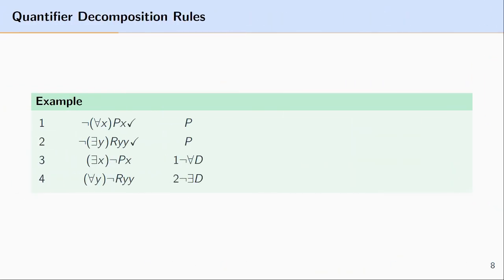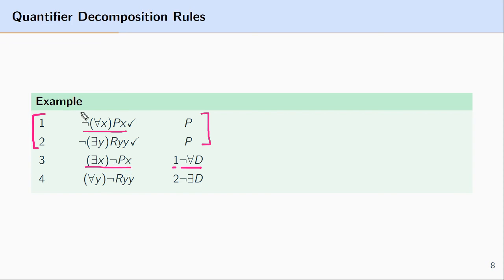Let's look at an example where both negated universal decomposition and negated existential decomposition are applied. Suppose we start with two formulas in our tree: ¬∀xPx and ¬∃yRyy. Since line one is a negated universally quantified formula, we apply negated universal decomposition to line one, giving us ∃x¬Px. We check line one off to indicate we have fully decomposed it and represented the conditions under which it is true in terms of line three.